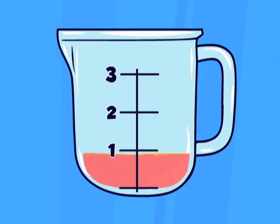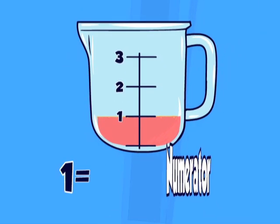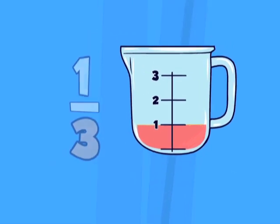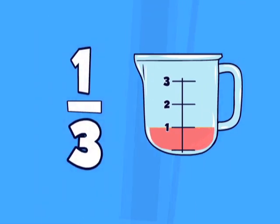For example, one part of this measuring cup is filled with tomato sauce. One is our numerator. There are three equal parts in all. Three is our denominator. So we say one third of the cup is filled with tomato sauce.